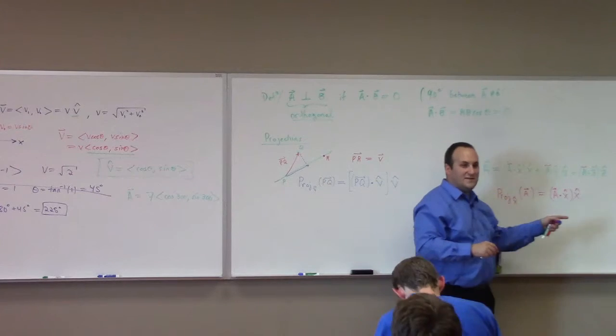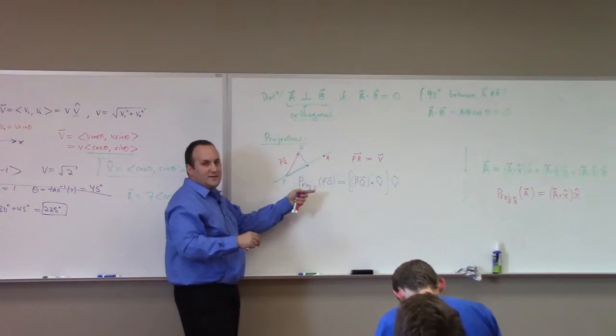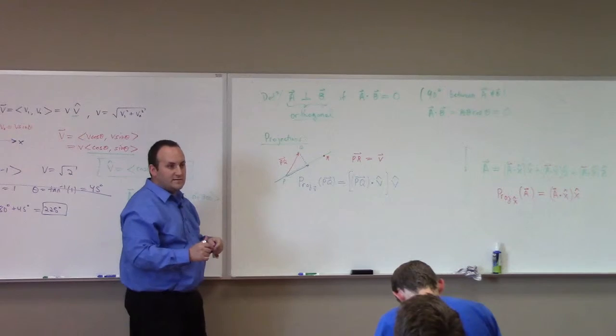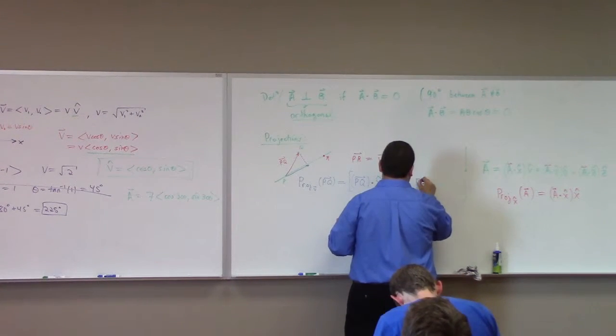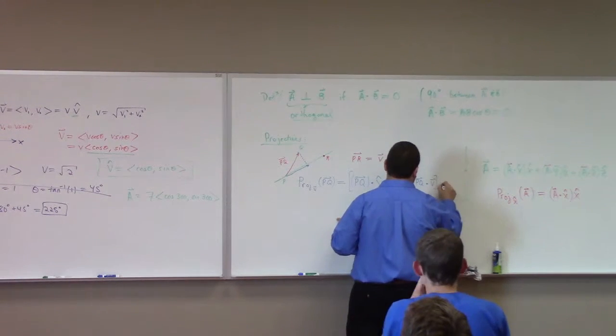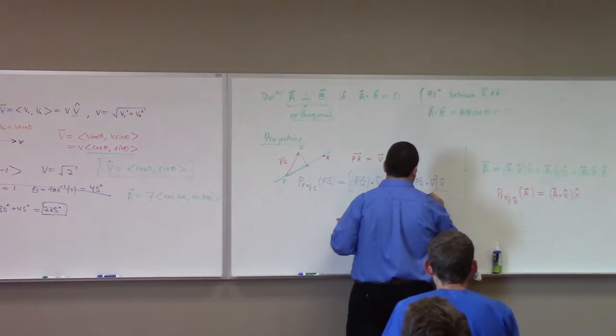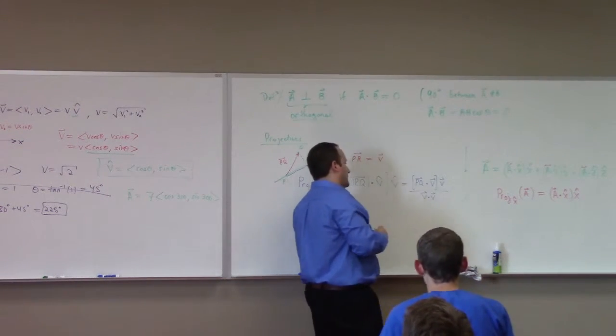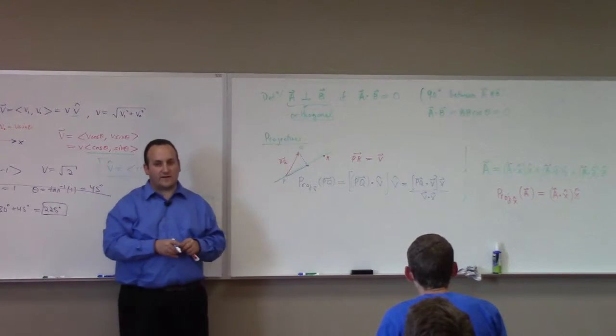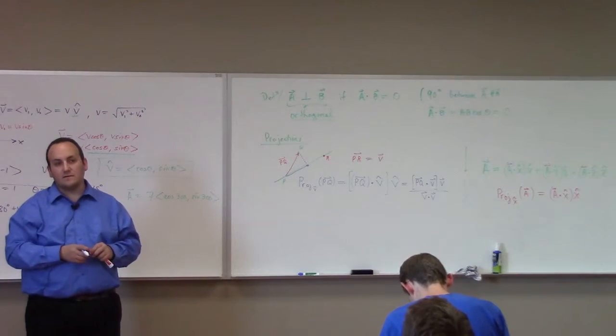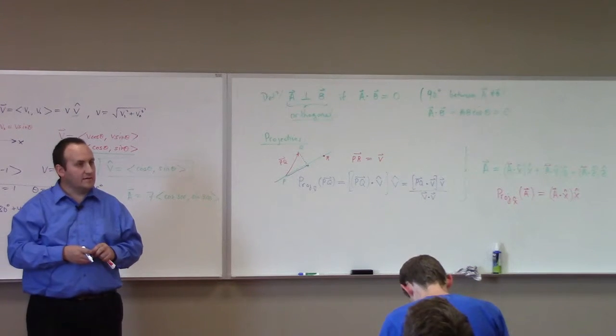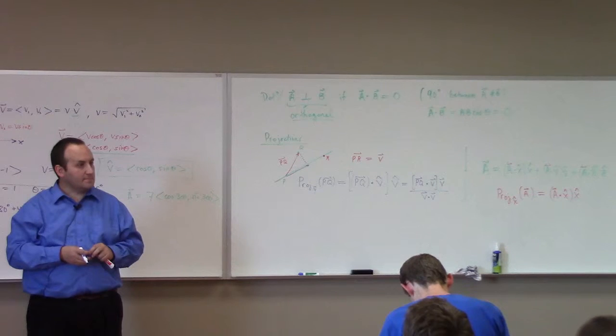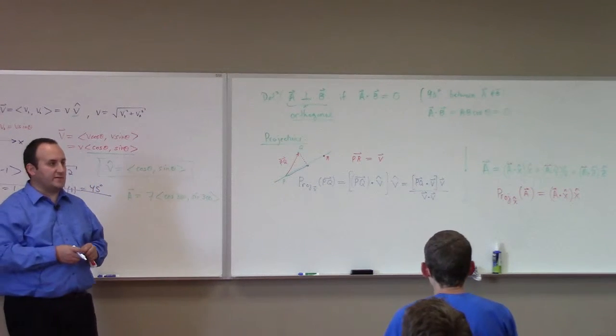So, dotting with v hat gives me the length of the shadow into the v direction, and then I put v hat on it to make it go in the v direction. Of course, over here, there was no calculation to do because x hat is already a unit vector, right? So, this vector just appears here again. But if v is not a unit vector, then you have to, like, rescale it to do it. There's another formula. This is equivalent to saying pq dot v vector times v vector all divided by v dot v.